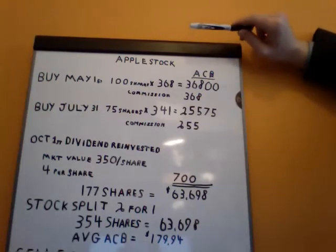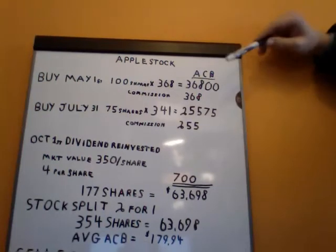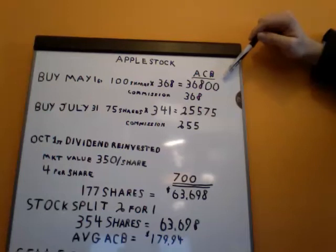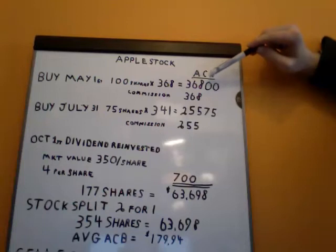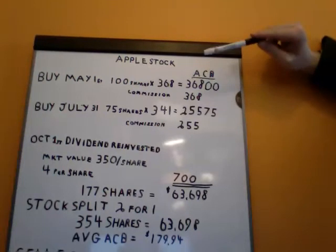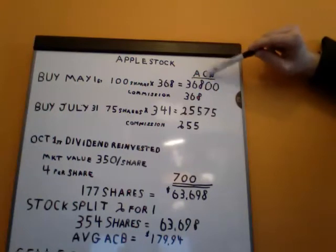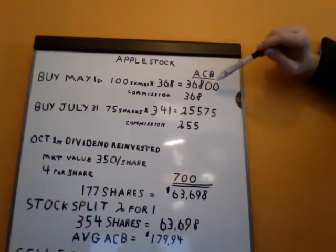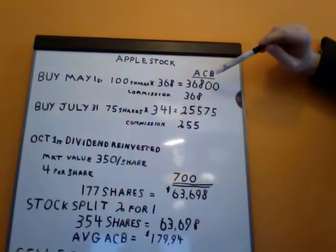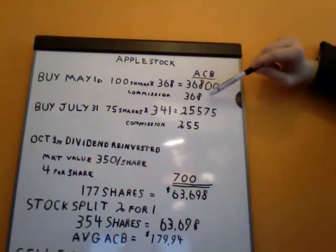For this example, I'm changing the numbers a bit. Let's assume on May 1st of this year, we bought 100 shares of Apple at $368, which was probably the price around that time. So it cost $36,800, and then we paid some commission on that purchase of $368.